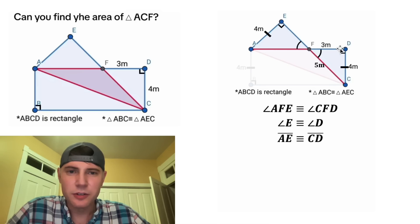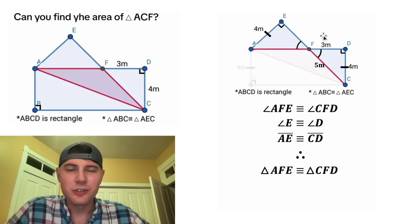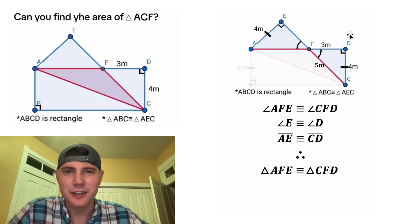And we know that AE is congruent to CD because they're both equal to 4. Therefore, we can conclude that these two triangles are congruent. And that's using the angle-angle-side theorem.